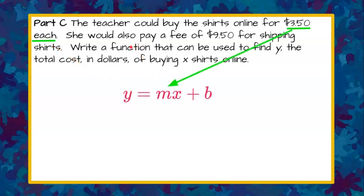She's also going to pay a fee of $9.50 for shipping the shirts. That's a flat fee for shipping the order of t-shirts, and that's an initial fee. No matter how many shirts she orders, we're paying $9.50 to ship them. So it's not per shirt, it's for the total order.